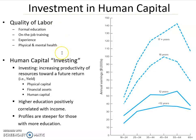All four of these things come together for most people, but we can enhance the productivity and quality of labor by working on any one of these components. Human capital is something we associate with the quality of labor, and for our purposes it's really going to be formal education and on-the-job training. You invest in human capital when you go to college, and the firm invests in your human capital when they give you on-the-job training.